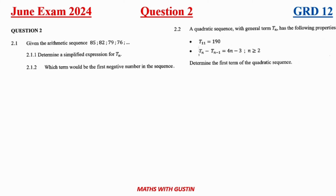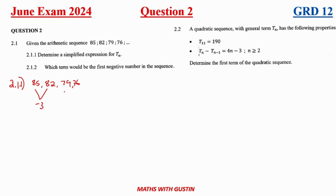Question 2.1 gives us an arithmetic sequence: 85, 82, 79, 76, and so on. We need to determine the simplified expression for Tn. Since this is an arithmetic sequence, we check the common difference: t2 minus t1 gives negative 3, 79 minus 82 gives negative 3, and 76 minus 79 gives negative 3.